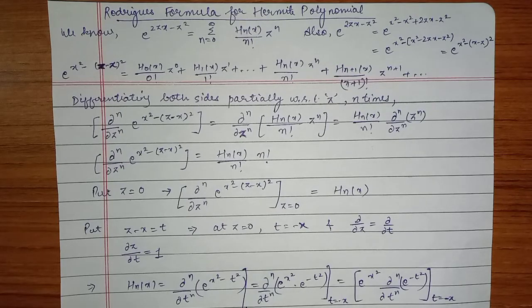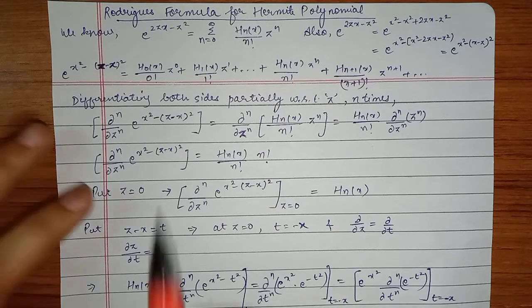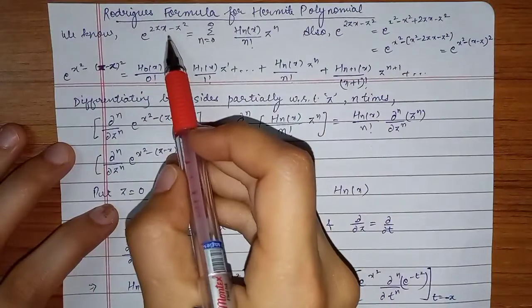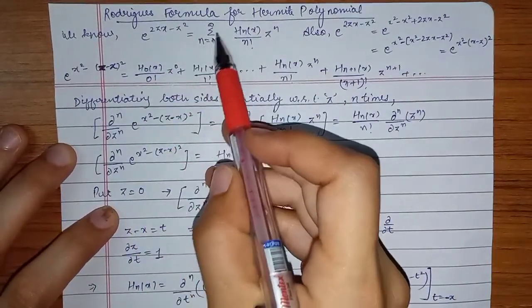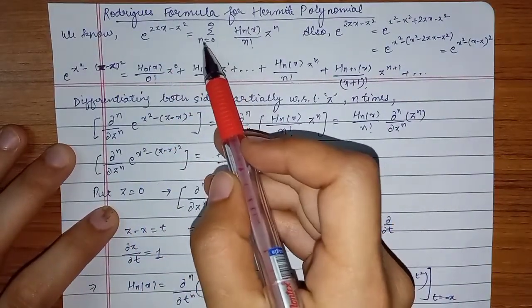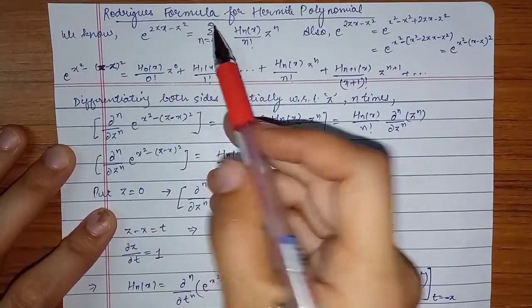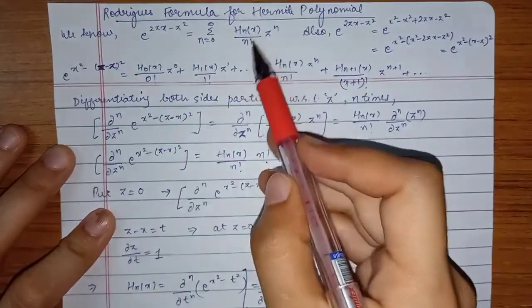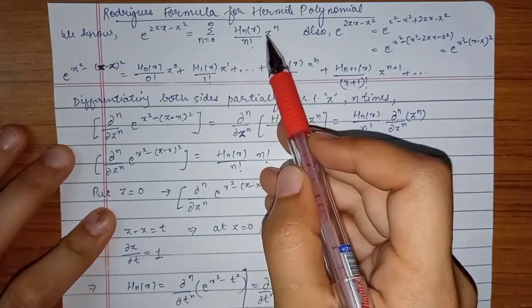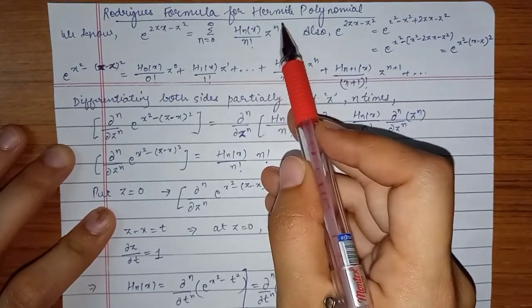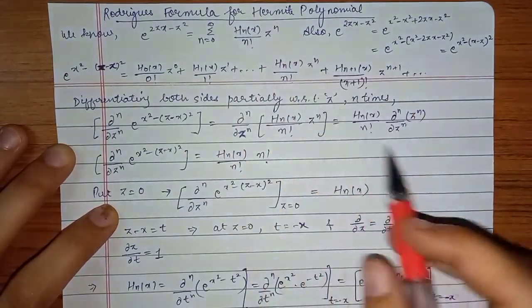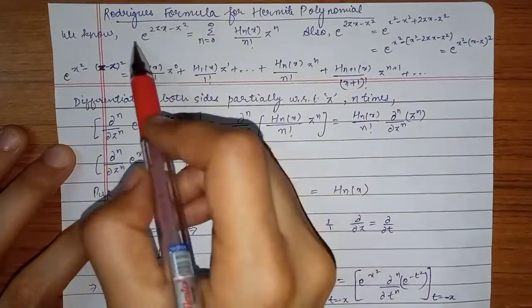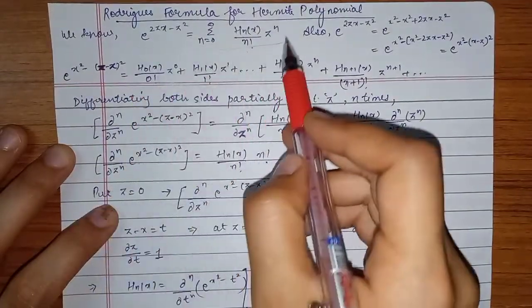We know that from the generating function of Hermite polynomial: e raised to power (2zx minus z²) is equal to summation from n=0 to infinity of H_n(x) upon n factorial into z raised to power n. This is the generating function of Hermite polynomial.